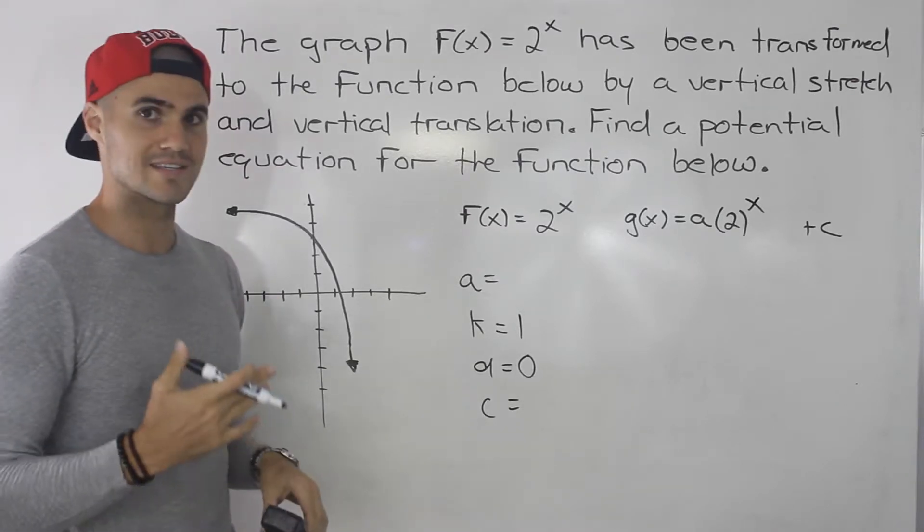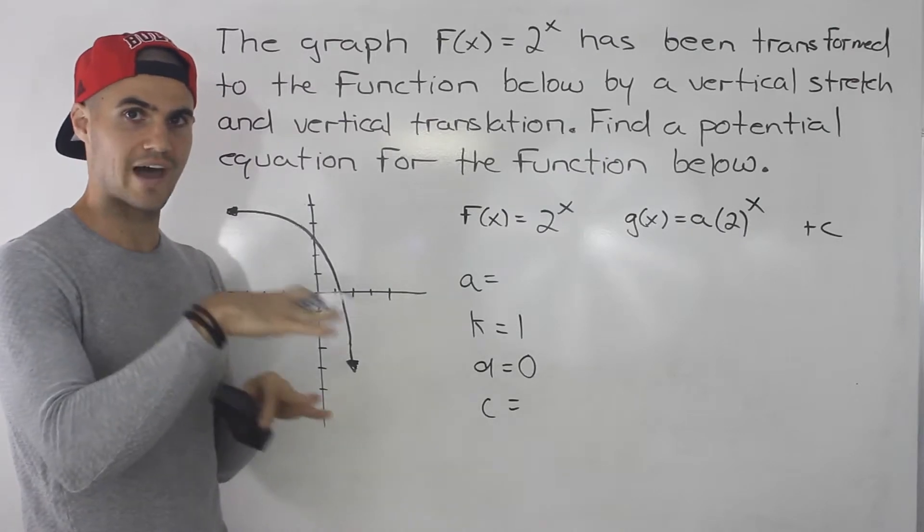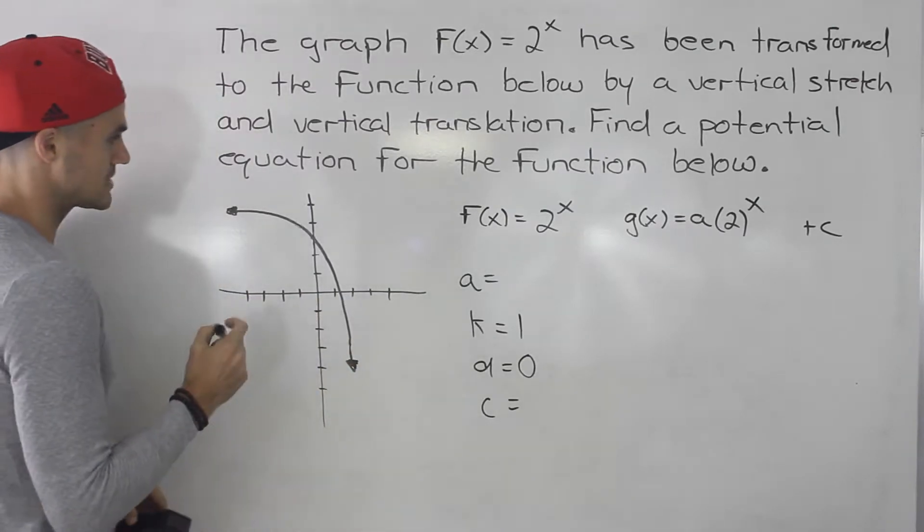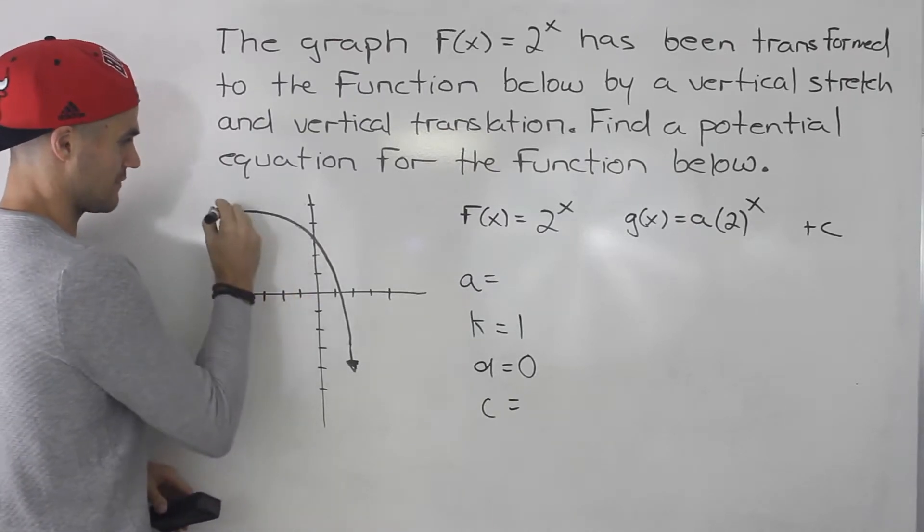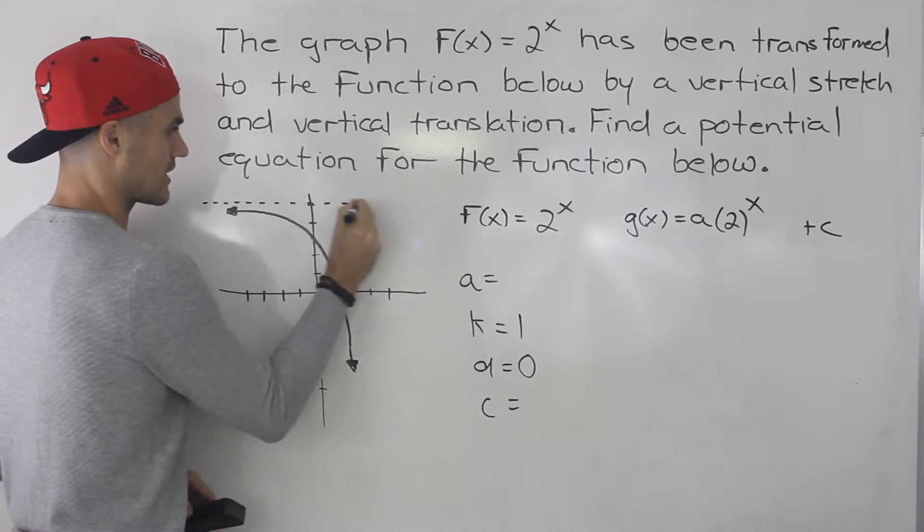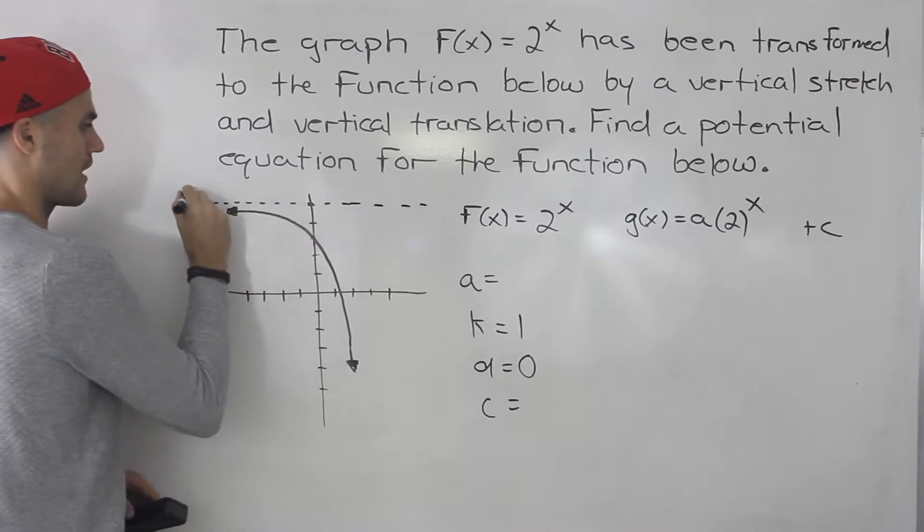Now, the easiest thing to start with is the c value, because if you remember the c value, it's the horizontal asymptote of an exponential function. And notice here, it's not fully clear on the graph, but we can pretty much estimate that the horizontal asymptote is going to happen at a y value of 5.